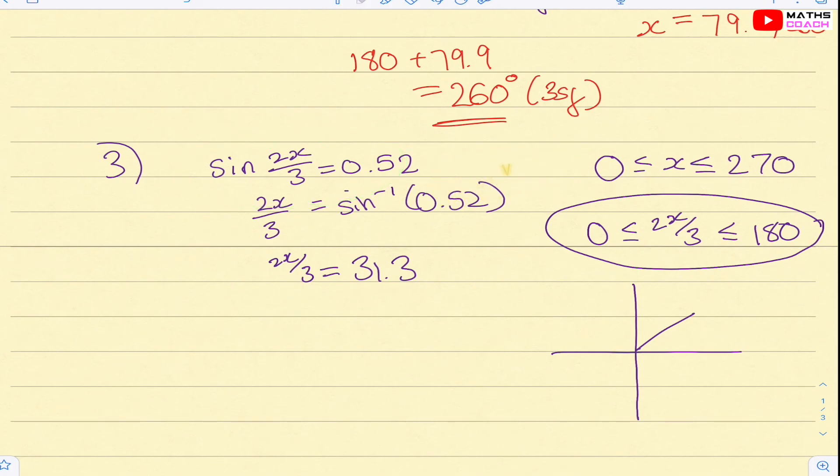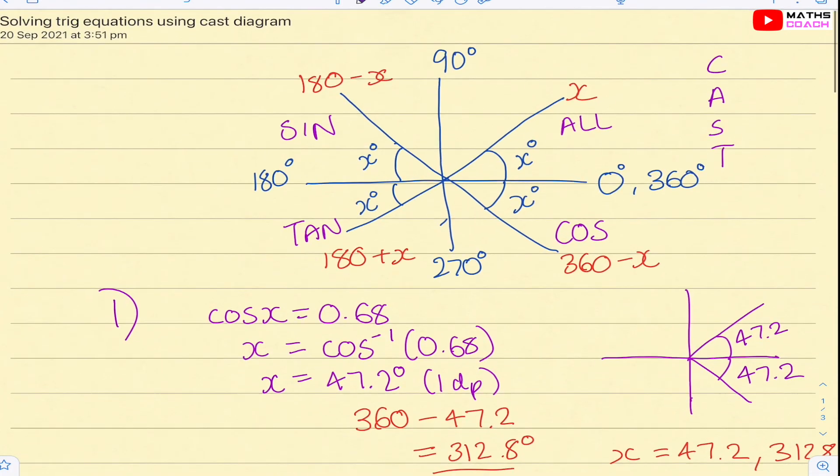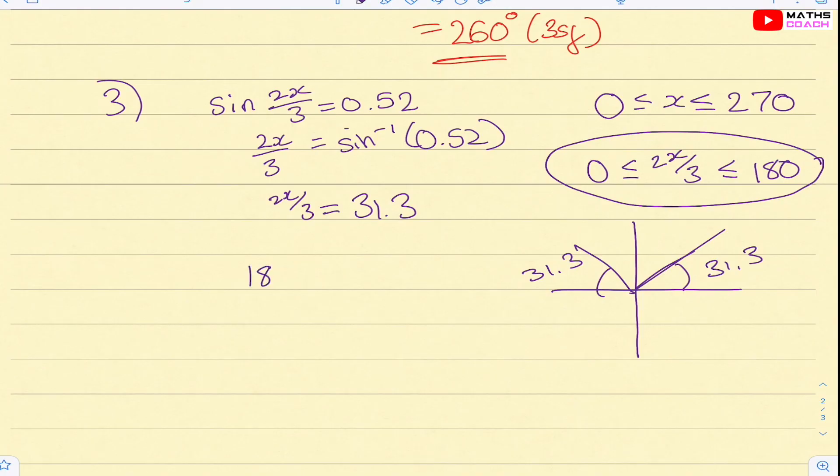So let's draw our CAST diagram. And we have, again, let's just make sure we're consistent. Sine is positive in this quadrant and also positive in this quadrant. So it will be 31.3, 31.3. So we're looking in the interval between 0 and 180. This is between 0 and 180 because if we go back to our diagram initially, this is the straight line. So our second solution is 180 minus 31.3, which gives 148.6. Our two solutions are 2/3 x is equal to 31.3 and 148.6.